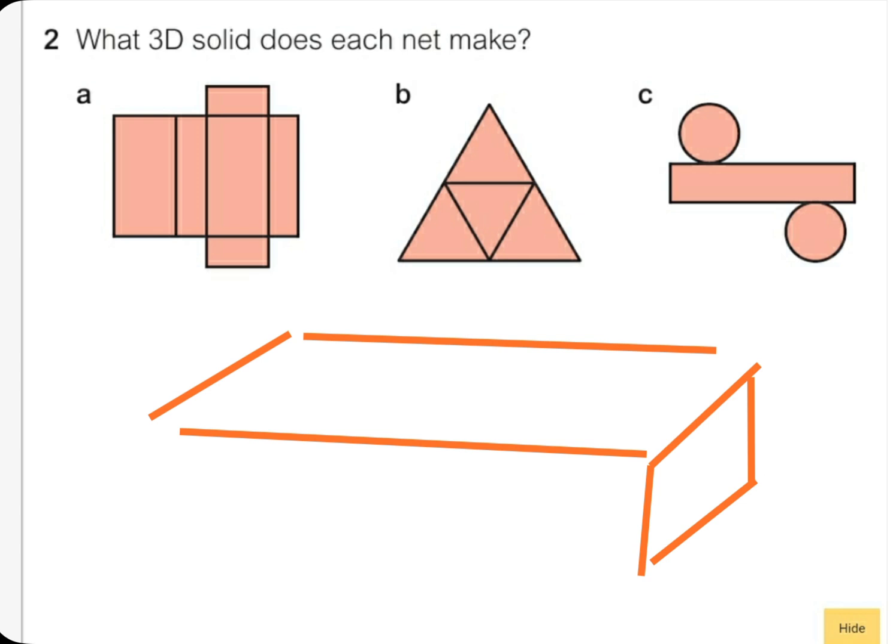So let me draw for you an example. A cuboid is like that, and then inside like that. So basically the cuboid is like that. So the first one is a cuboid. This net makes a cuboid. Now let's take a look at question B.